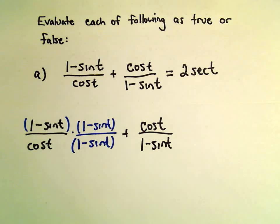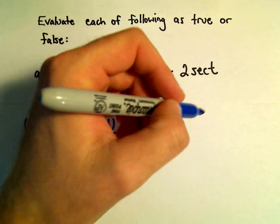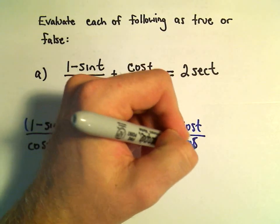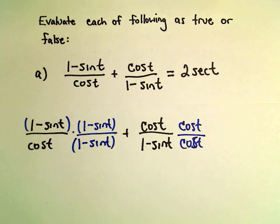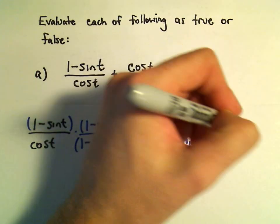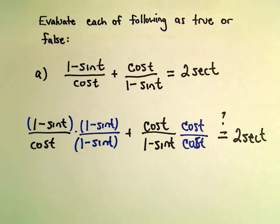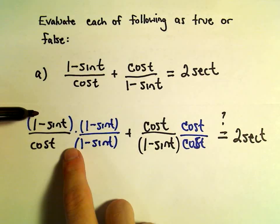It looks like we would just have to multiply the numerator and denominator by cosine t. And again, I'm kind of wondering, does this equal 2 secant t at the end?